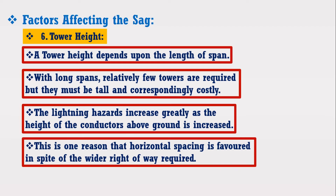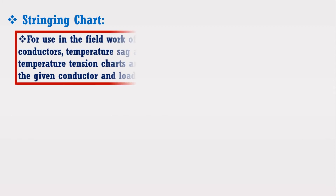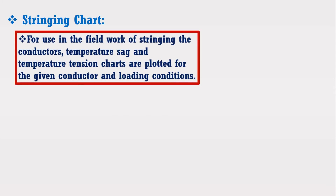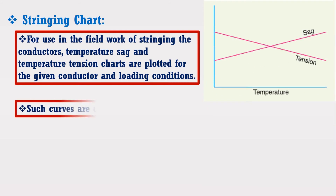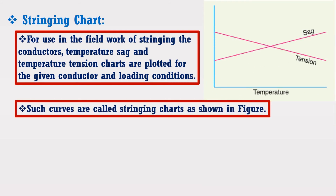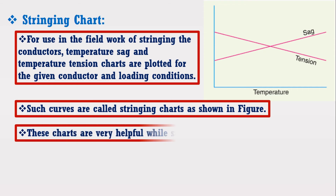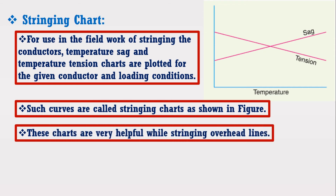I am going to discuss another important term used with respect to sag and tension, known as stringing charts. For use in the field work of stringing the conductors, temperature-sag and temperature-tension charts are plotted for the given conductors and loading conditions. Such curves are called stringing charts, as shown in the figure. These charts are very helpful while stringing overhead lines.